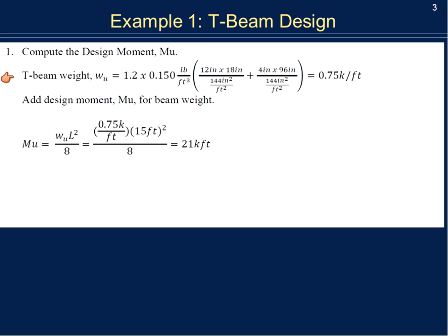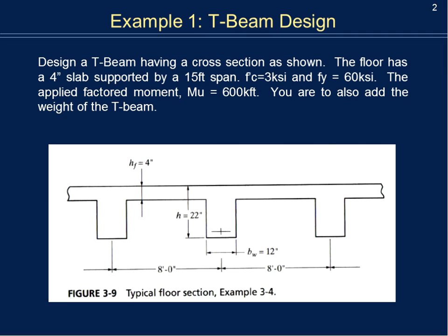To determine the beam's distributed weight W_u, I factor it as a dead load: 1.2 times the unit weight of concrete, which is 0.15 kips per cubic foot, times 12 inches by 18 inches. The width of the T-beam's web is 12 inches, times the height of 18 inches — this is just the T-beam's web.